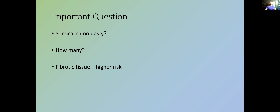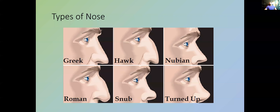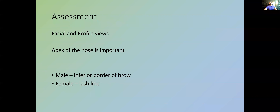If you're feeling confident, there are certain tools you can use — for example, a cannula. There are various types of noses, and everything will be perceived slightly differently. As much as we as practitioners try to make aesthetics objective, it is still a very subjective topic. When it comes to assessment, the most important thing is two views: full facial view and profile view.